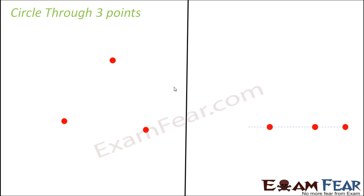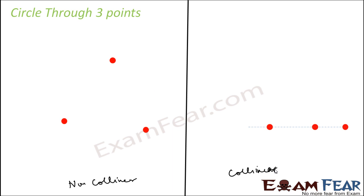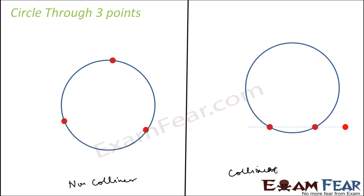Let's try from three points. There are two options: one is that three points are on the same line — they are collinear — and they are non-collinear. If you try to draw a circle from three collinear points, you will see that the third point is not coming in. So drawing a circle from three collinear points is impossible.